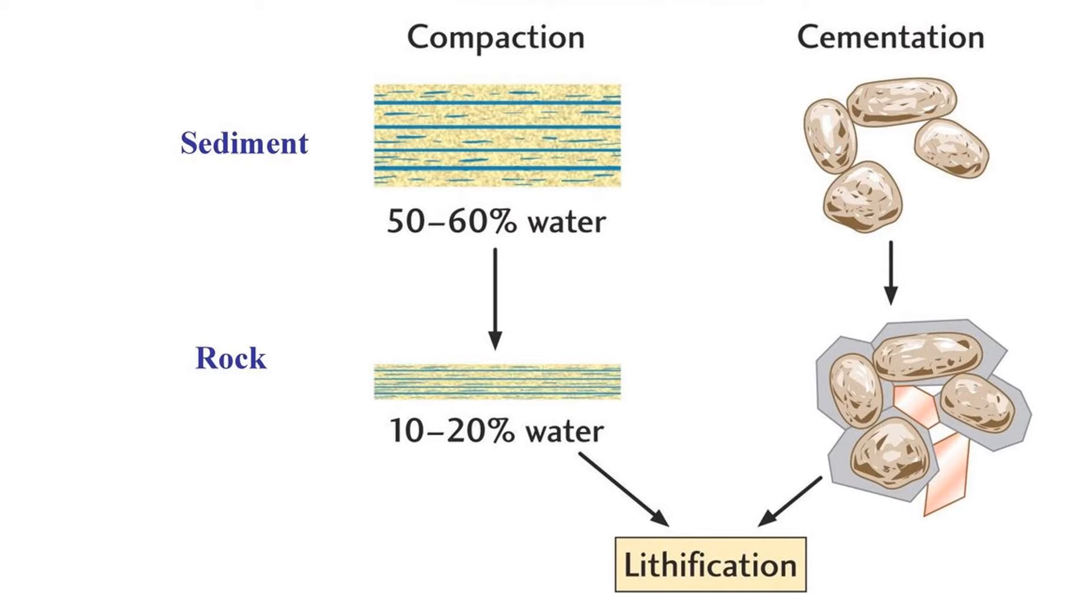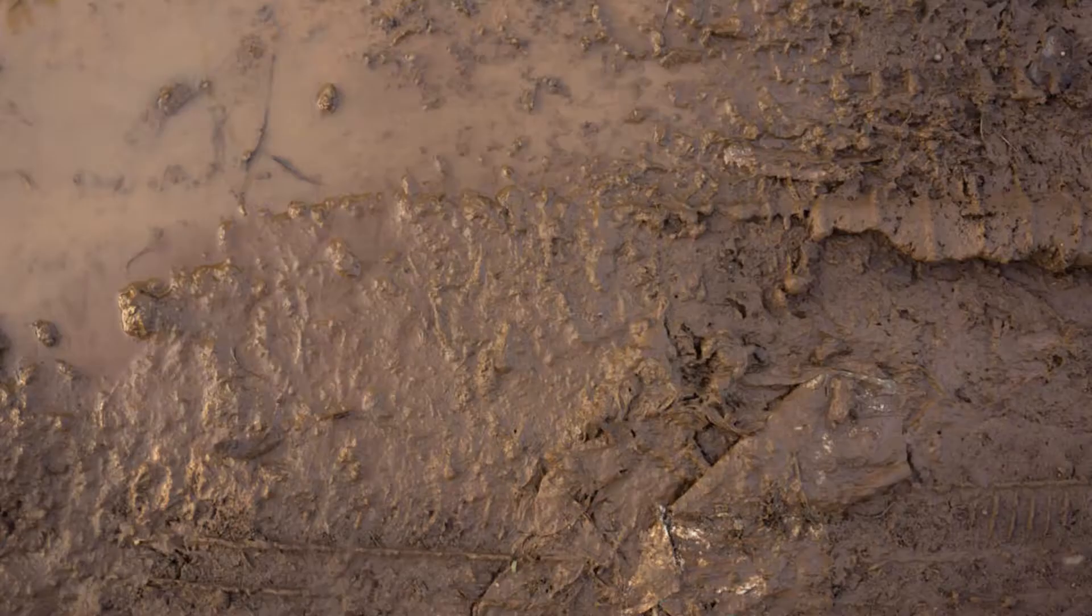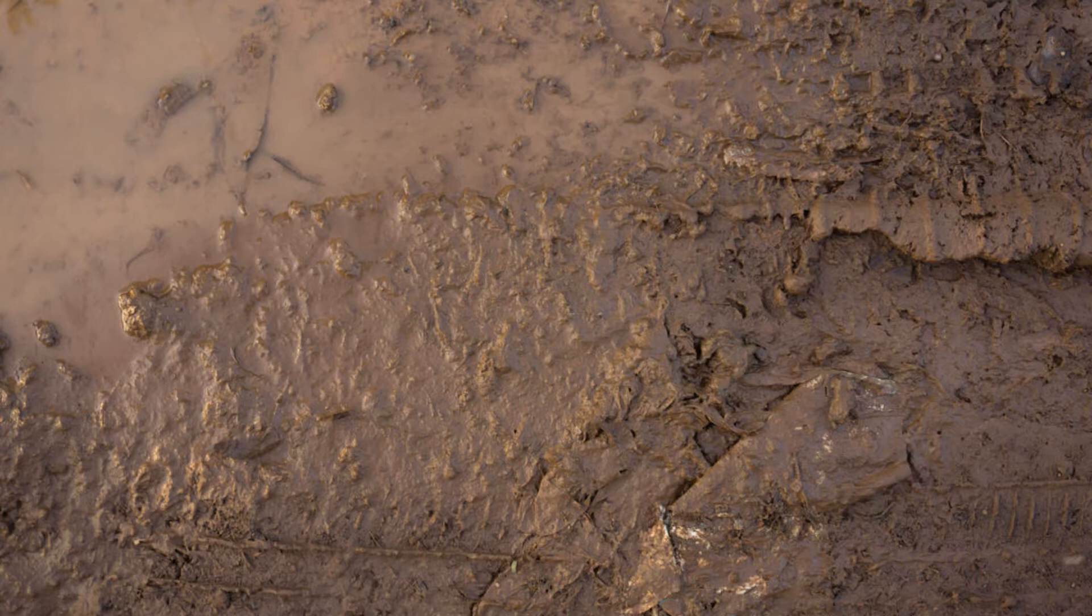Lithification itself typically only involves compaction and cementation of sediment. These processes happen at the same time. At the beginning of diagenesis, sediment is typically soft, loosely packed, and filled with fluids like water and air. In terms of volume, mud can be up to 80% water.